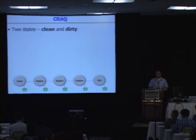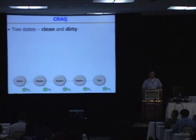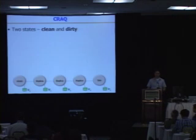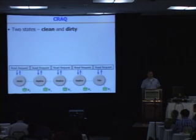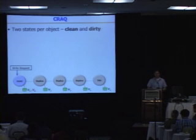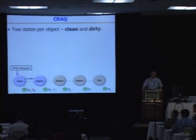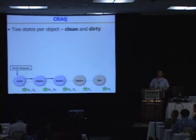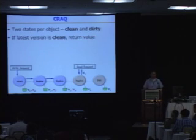So I'll introduce Crack. In Crack, we borrow the chain replication model, but we say that there are two states per object: clean and dirty. Clean means that all replicas in the system are storing the same version number — here they're all storing version 1. If the object is clean, we can read anywhere in the chain because we have the guarantee that all replicas store the same version. When a write request comes in, the head takes the new update — version 2 — adds it to its data store, and marks itself as dirty. It then propagates it down to the next replica, which adds version 2, marks itself dirty, and continues the propagation. If a read comes into a clean replica, it can just respond with version 1 right away because it knows it's clean.